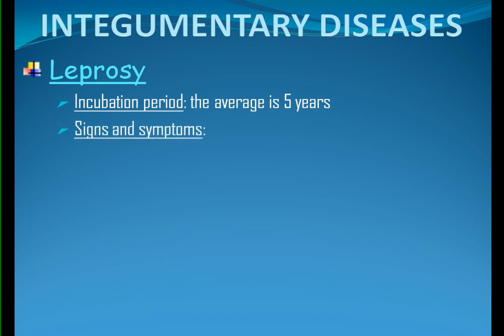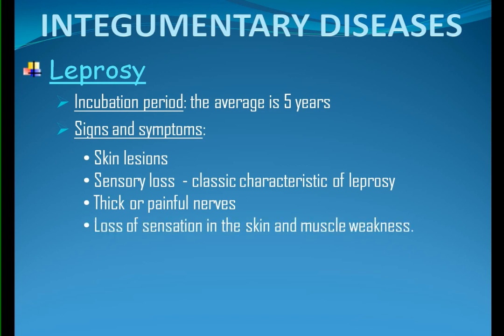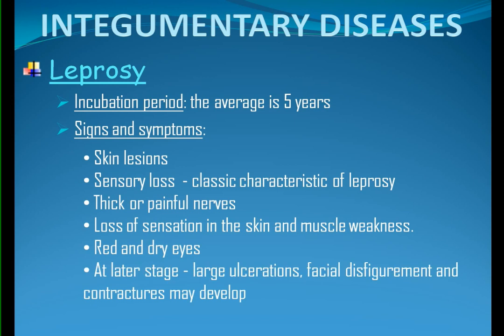Signs and symptoms: skin lesions that are single or multiple, which can appear as flat, raised, or nodular. Sensory loss — this is the classic characteristic of leprosy. Next is thick or painful nerves, due to nerve damage accompanied by loss of sensation in the skin and muscle weakness. Red and dry eyes. In later stages, large ulcerations, facial disfigurement, and contractures may develop.